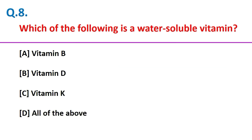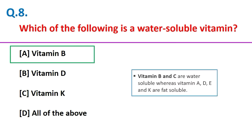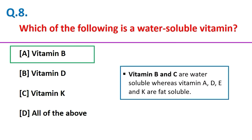Which of the following is a water-soluble vitamin? Vitamin B. Friends, vitamins B and C are water-soluble vitamins, whereas vitamins A, D, E, and K are fat-soluble vitamins.